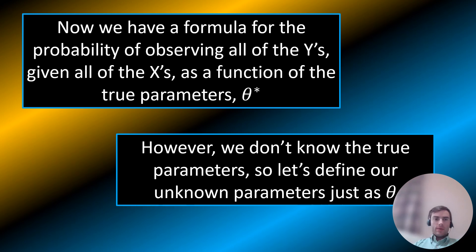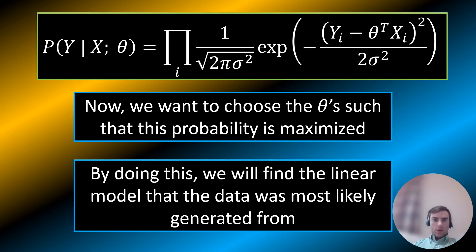Now we have a formula for the probability of observing all the y's given all the x's as a function of the true parameters theta star. However, we don't know the true parameters, so we define our unknown parameters simply as theta. We want to choose theta such that this probability is maximized — we want the regression line that maximizes the probability of generating the observed data.